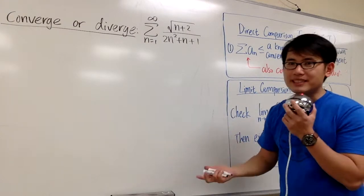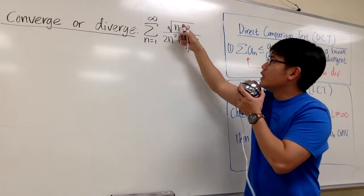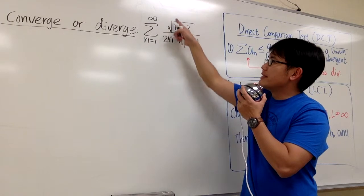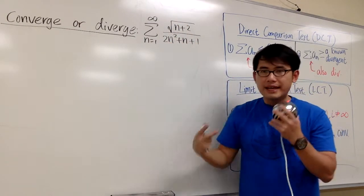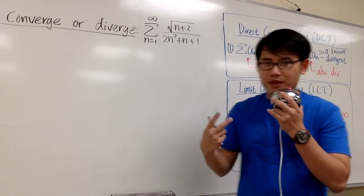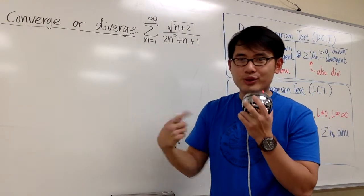So, let's use a comparison test for this. As we can see, in the numerator we can just consider the square root of n, and in the denominator we can consider 2n squared. That's something we can conclude much better right away, and then we can draw a conclusion.